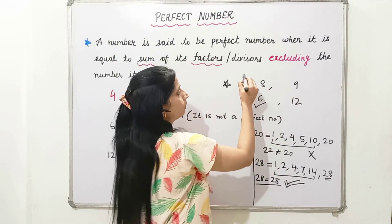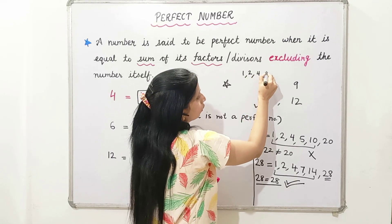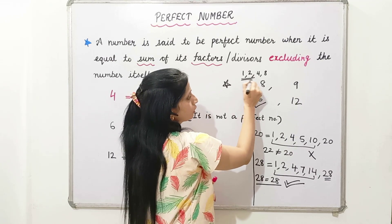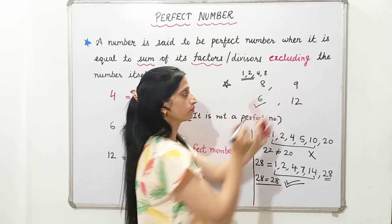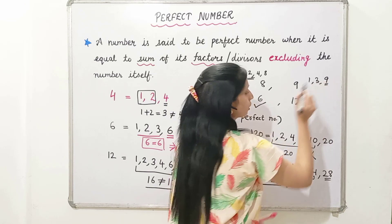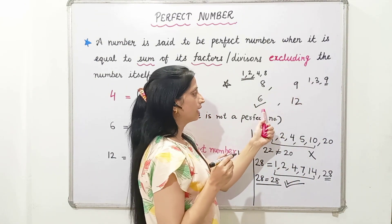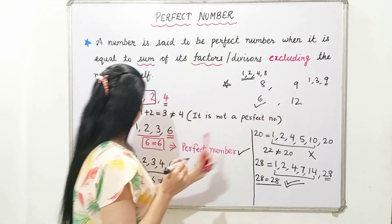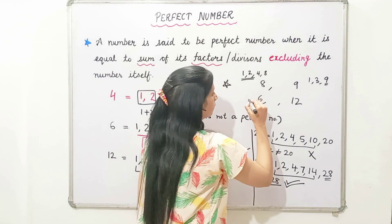The factors of 8 are 1, 2, 4, and 8. Adding 1 plus 2 plus 4 gives 7, which is not equal to 8. For 9, the factors are 1, 3, and 9. Adding 1 plus 3 gives 4, which is not equal to 9. We already solved 6 and 12 in our examples. So the answer is 6.